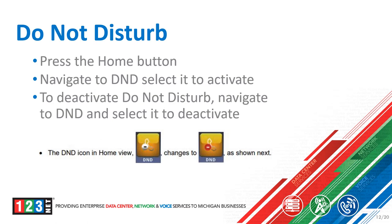Do not disturb: if you wish for all calls to go straight to your voicemail when your extension is dialed, you would activate do not disturb. That way your phone will not ring at all and it will just send calls directly to voicemail. To initiate this, press the home button on your phone to access the main menu, navigate to DND, and select it to activate it. To deactivate do not disturb, navigate to DND and select it again to deactivate it.